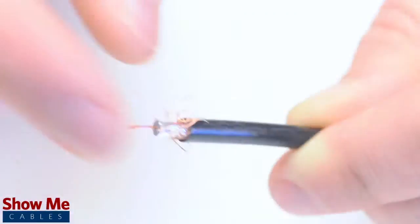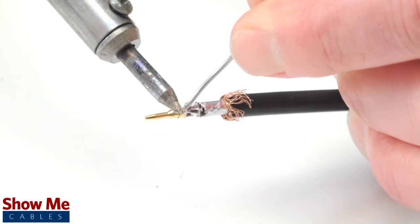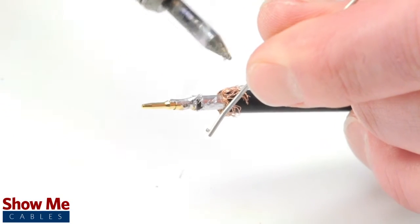Pull back the braided shield and insert the pin onto the center conductor. Solder the pin onto the center conductor and insert the connector housing over the cable.